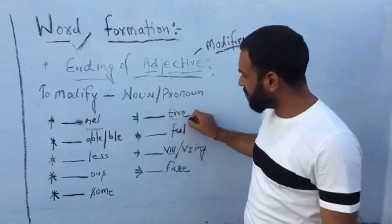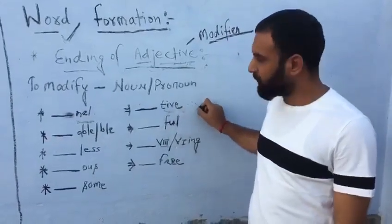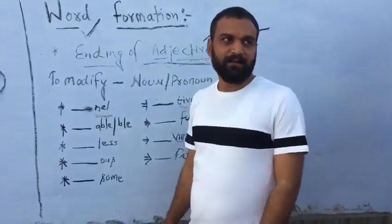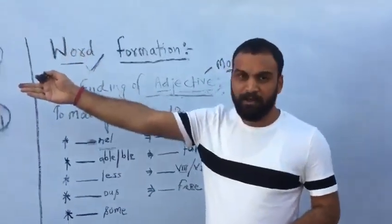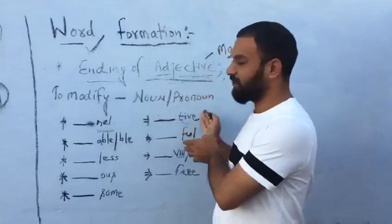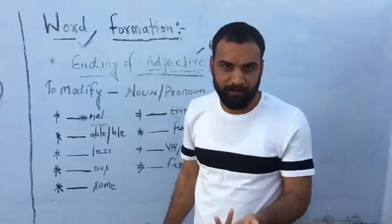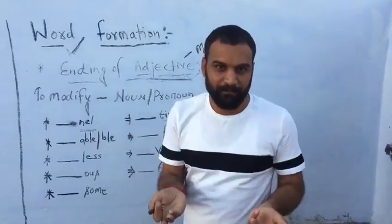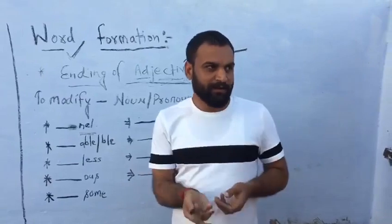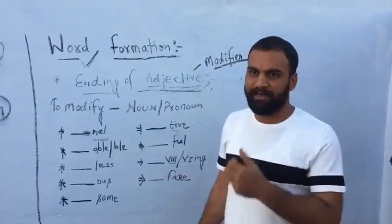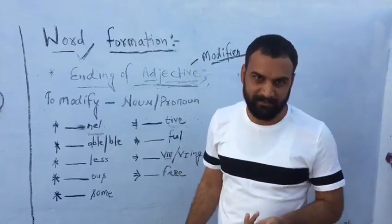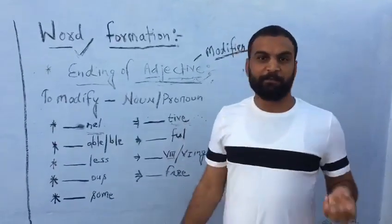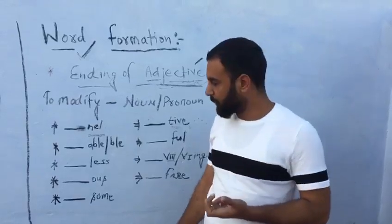Second, aapka word aake khatam ho raha T-I-V-E pe, toh woh bhi ek adjective ho ga. Like competition is a word, that is a noun. Aur agar aap usko adjective banana chahte hain, it will become competitive. Possession is a noun, but if you make its adjective, it will become possessive. So you can make examples like, nowadays I am attending competitive classes for getting a government job. Similarly, my mother is very possessive for me. Like you can make.